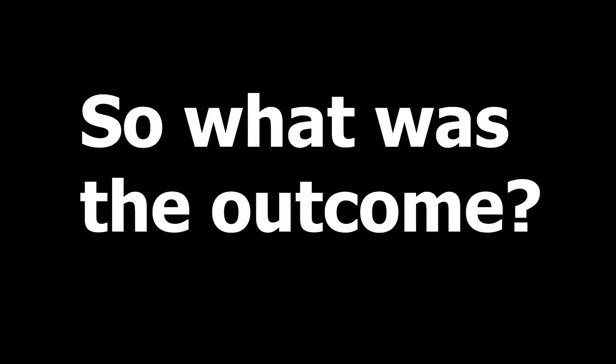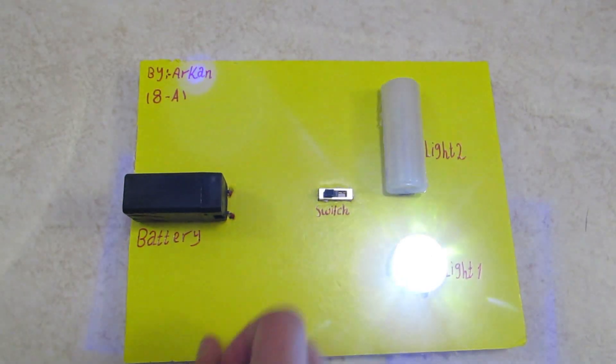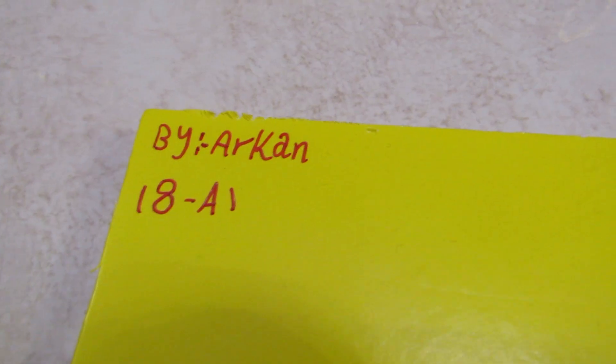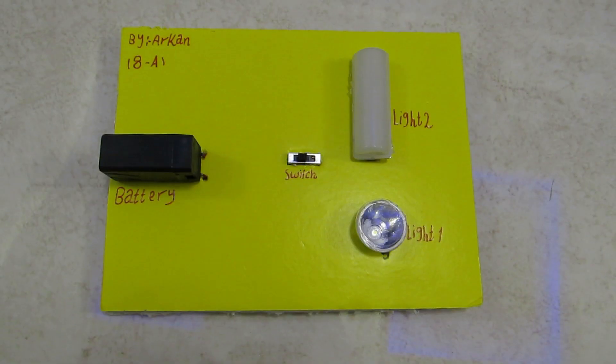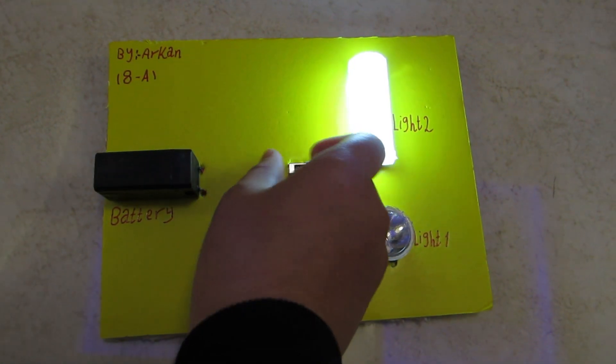Step eight, the last step: I glued the cardboard to the bottom so that the wires don't get damaged. So what was the outcome? The outcome was this — it went very well, just as I planned. The lights are connected to the switch.